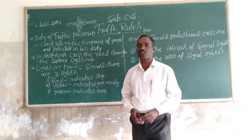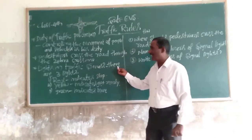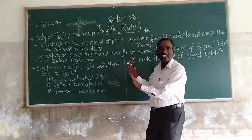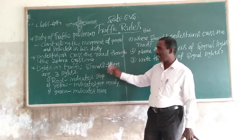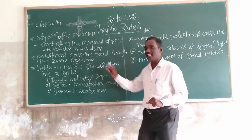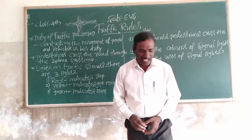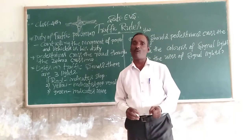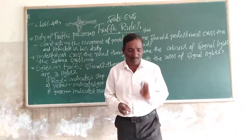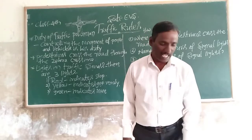Nearest to the zebra crossing are the signal lights — traffic signal lights. There are three lights in the traffic signals: red, yellow, and green. Red light indicates stop the vehicles. Yellow light indicates get ready. Green light indicates move the vehicles. These signal lights give specific instructions for the movement of vehicles and people.